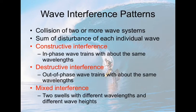This video is going to talk about wave interference. This is a concept you probably covered in physics, but we have to talk about it again. Wave interference occurs when you have two or more wave systems that collide, and they can either increase or decrease wave height depending on what type of interference.